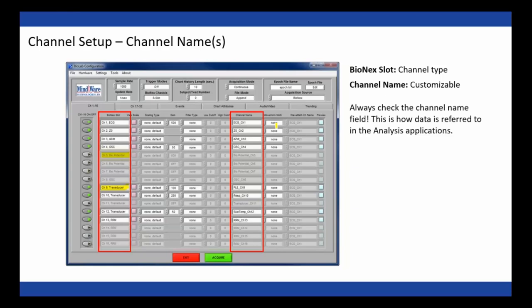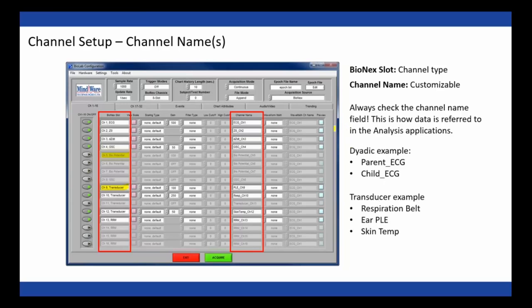The channel name column is customizable, and you should always check it to make sure it makes sense for analysis purposes. If you just see 'transducer,' you won't know months later whether that was your PLEth channel or your respiration belt. Label channels based on the type of signal being acquired. For multi-subject or dyadic studies, name channels after the specific participant — for example, 'parent ECG' and 'child ECG' — because when both subjects are mixed in a file it can get confusing unless clearly defined.